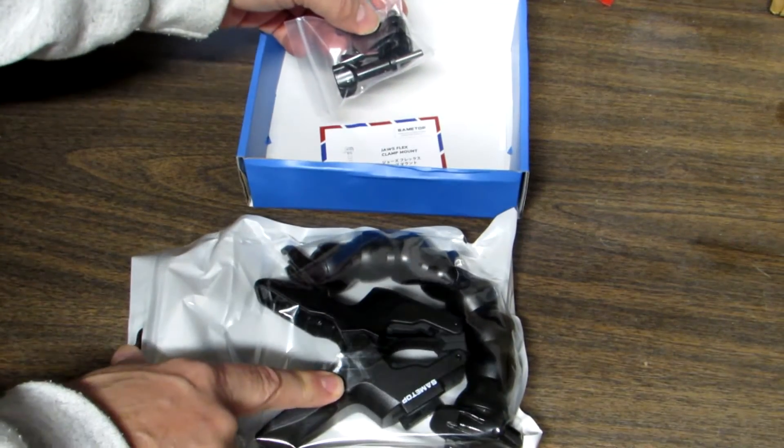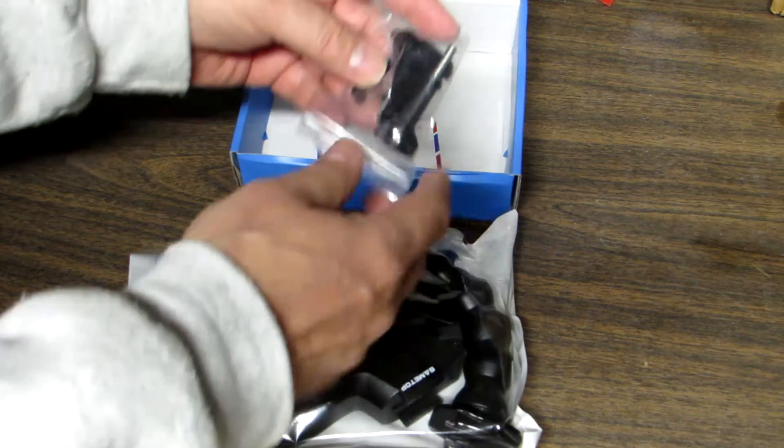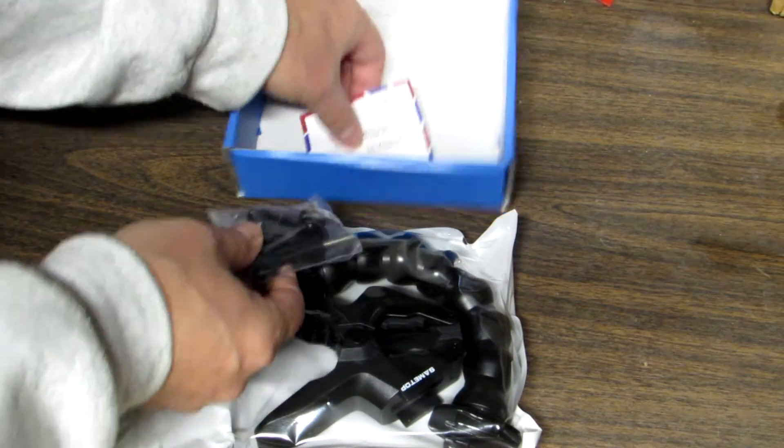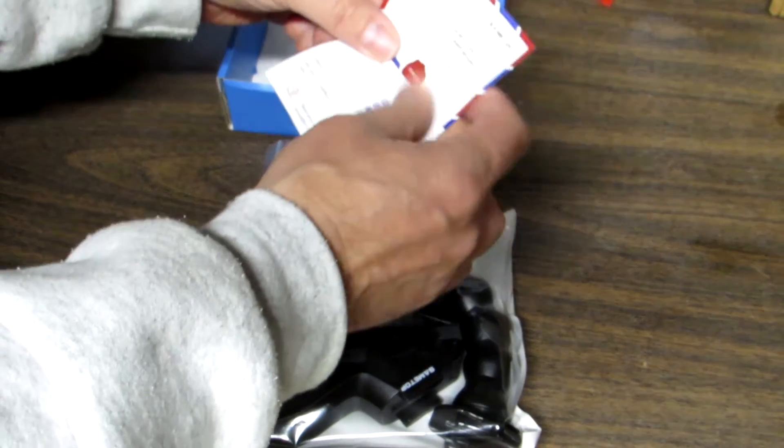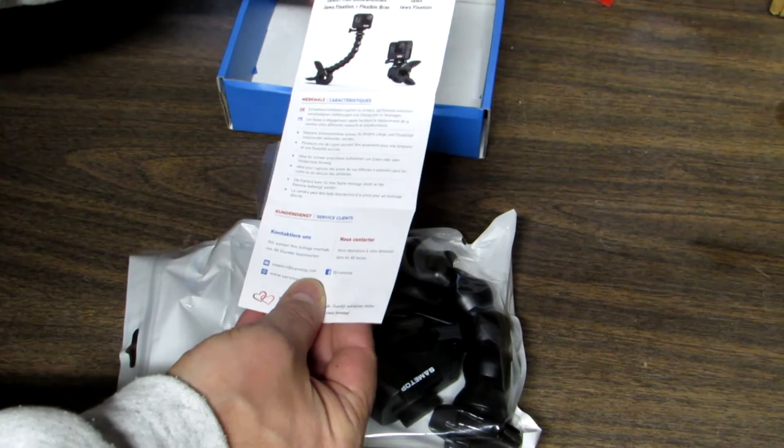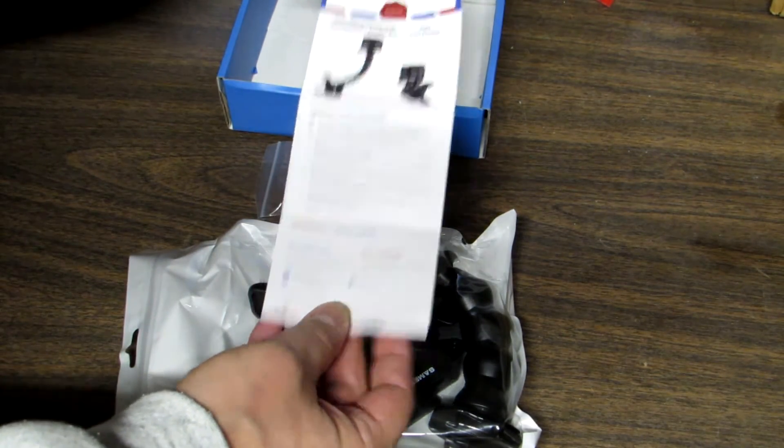We've got the clamp, the flexible extension, and here's the little GoPro mount. There's a little card in here. I guess this is the instructions. They're in Japanese or Chinese or some other language so we'll figure it out.